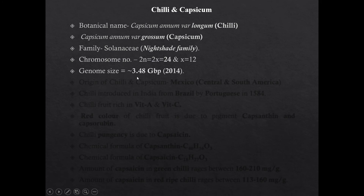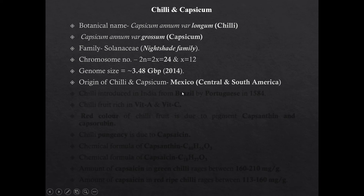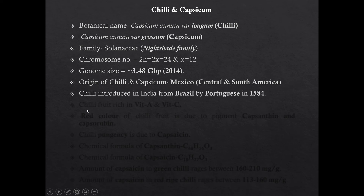The genome size of chili is 3.48 GB. Genome sequencing of chili was completed in 2014. The origin of chili and capsicum is Mexico. Chili was introduced in India from Brazil by the Portuguese in 1584.